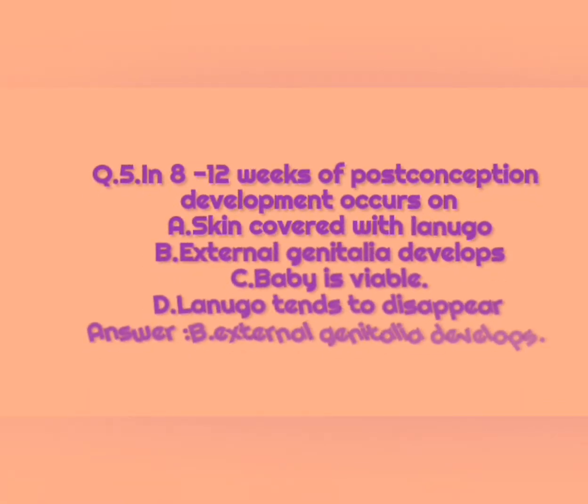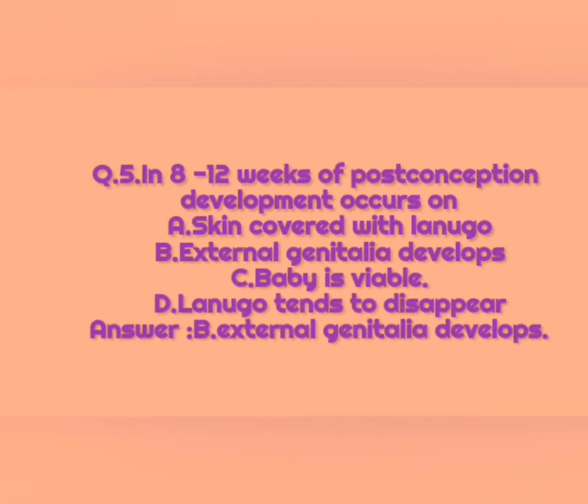Question number five: In eight to twelve weeks of post-conception, development occurs on — option A: skin is covered with lanugo, option B: external genitalia develops, option C: baby is viable, option D: lanugo tends to disappear. The correct answer is option B, external genitalia develops.